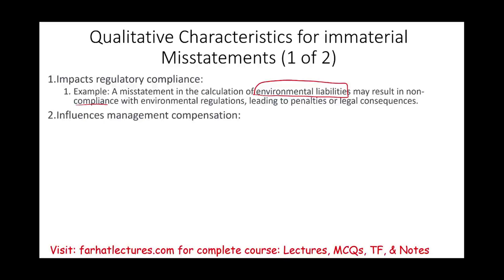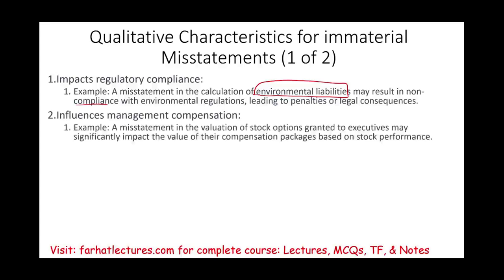What if the misstatement influenced management compensation? It's a misstatement, and it's not a big deal numerically because it's not material — but it's influencing how much management is being compensated. An example would be how a company valued stock options, the expense for stock options granted to executives. The amount itself is not material, but it's influencing compensation. So is it material now? Are they doing this on purpose to get their compensation? That's what you have to look at — that's a different ballgame.